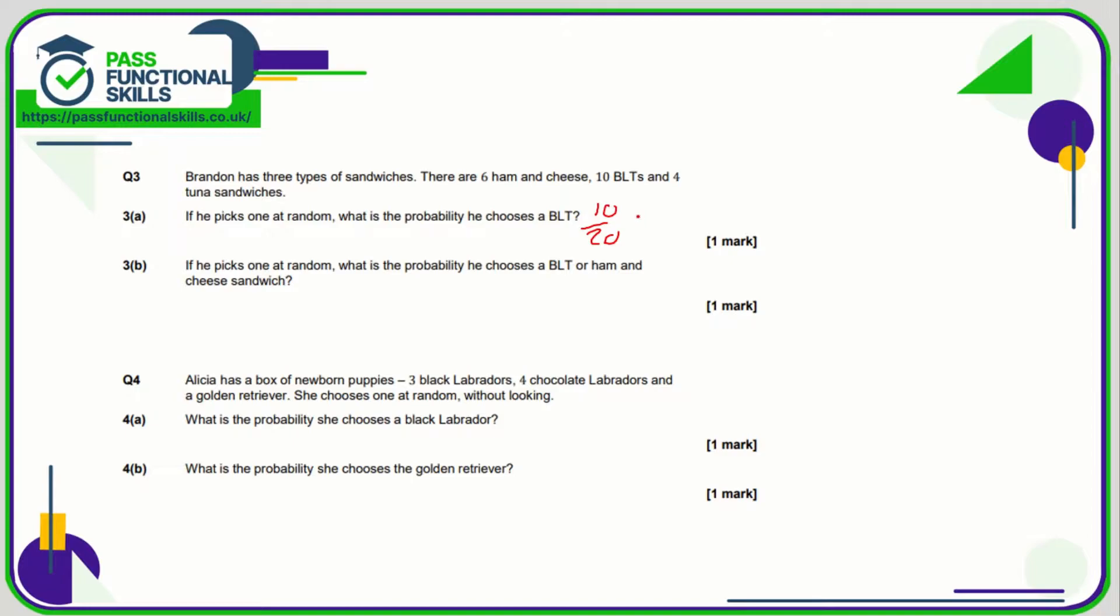If he picks one at random, what is the probability he chooses a BLT or a ham? So BLT or a ham and cheese is 16 out of the 20.